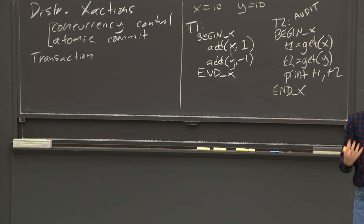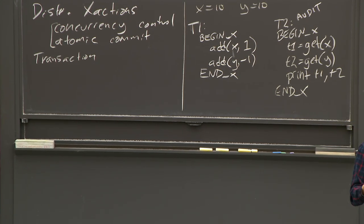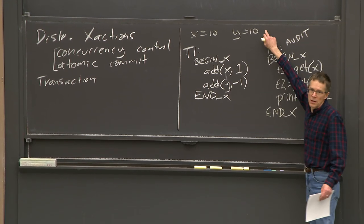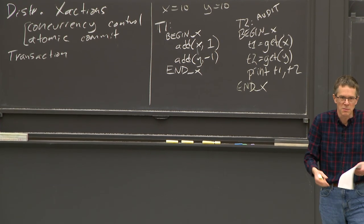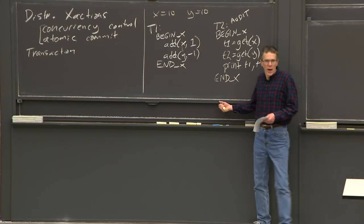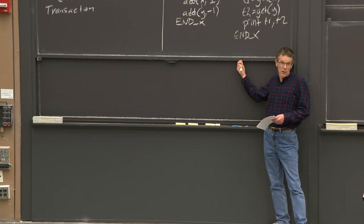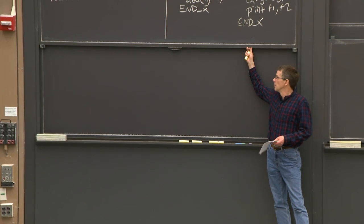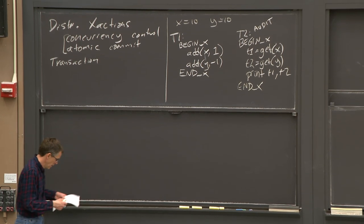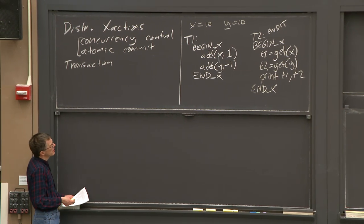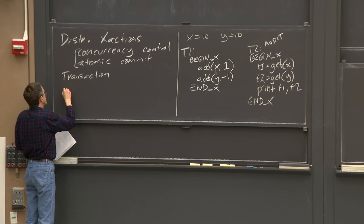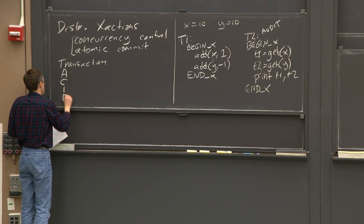The question is: what are the legal results from these two transactions? Given the starting state — both balances at $10 — what could be the final results after running both transactions, possibly at the same time? We need a notion of correctness. Databases usually have a notion of correctness called ACID.